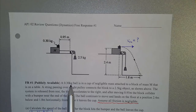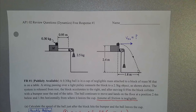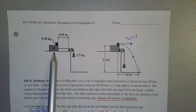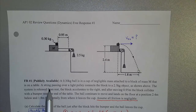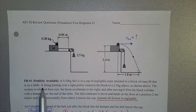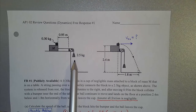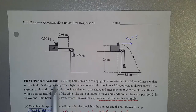A 0.3 kilogram ball is in a cup of negligible mass attached to a block of mass M that is on a table. Here's our block of mass M, and here's our small cup with a 0.3 kilogram mass inside. A string passes over a light pulley and connects the block to a 2.5 kilogram object hanging off the pulley.